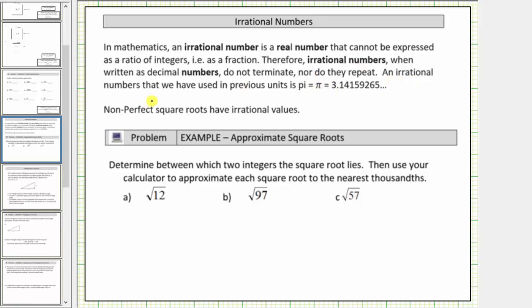An irrational number that we have used in previous units is pi, which is approximately 3.14, but as a decimal it does not terminate nor repeat, and therefore it is irrational.